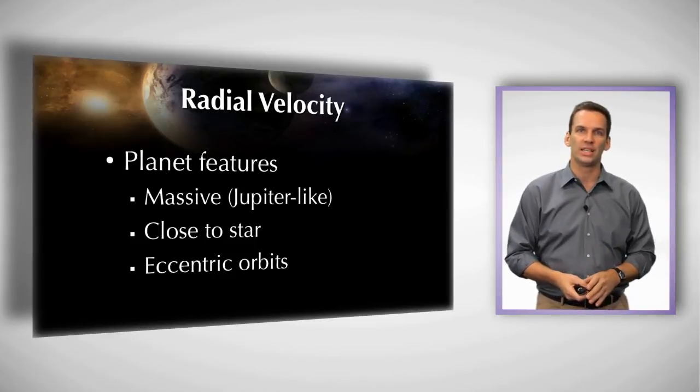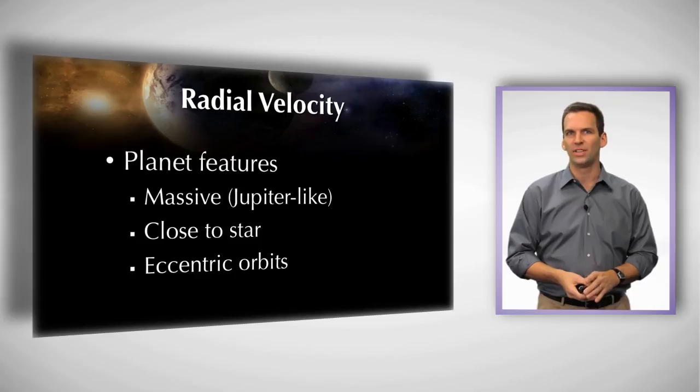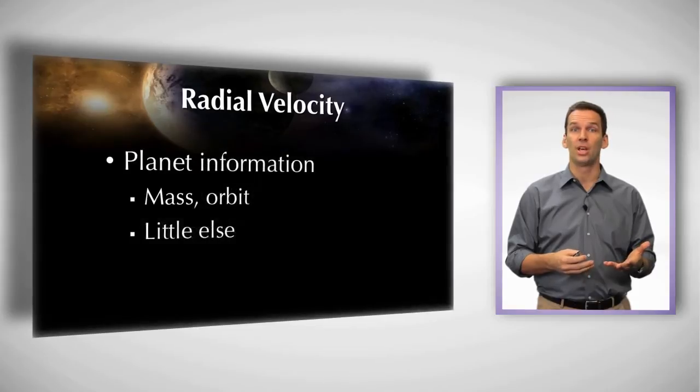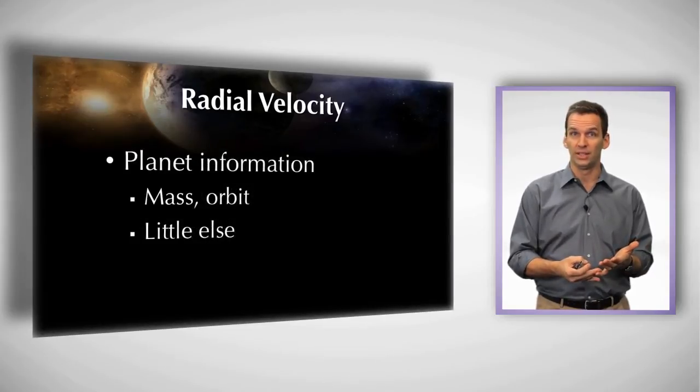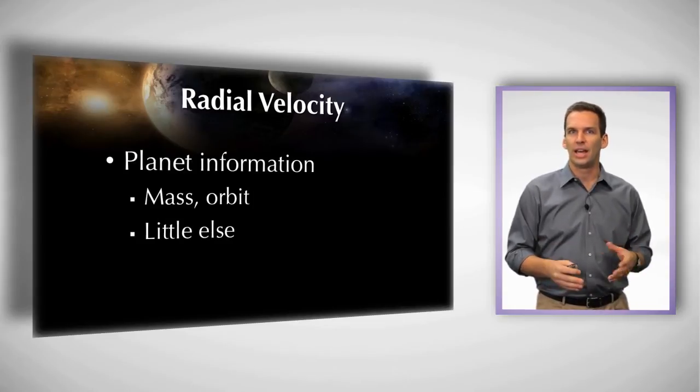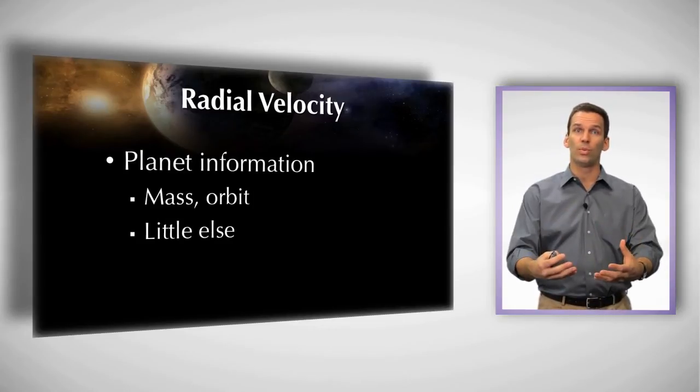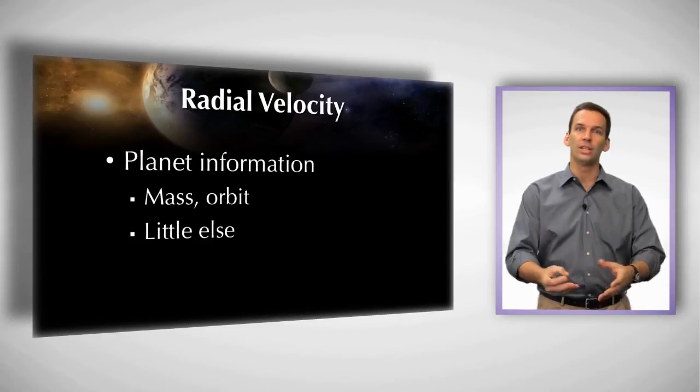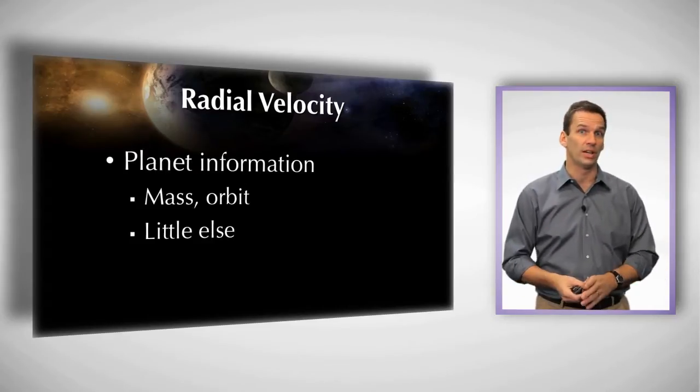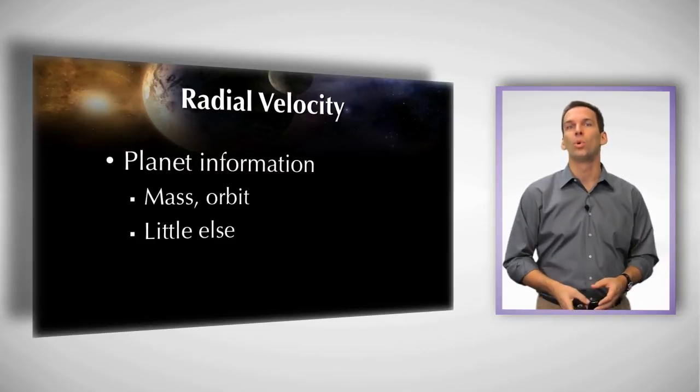Now using the radial velocity technique, we found roughly 500 planets using this technique. This technique gives us information about the mass of the planet. It gives us information about the orbit of the planet. But it doesn't give us a lot else. And as we see, ultimately one of the reasons for looking for extrasolar planets is to answer the question, is there life somewhere else out there? We're going to have to get more kinds of information.